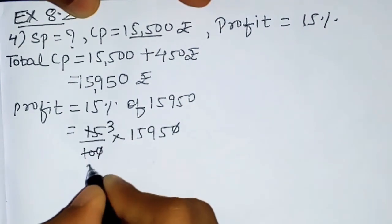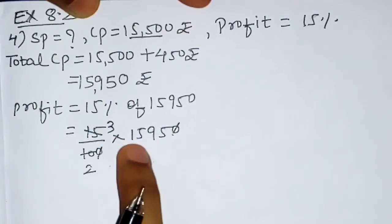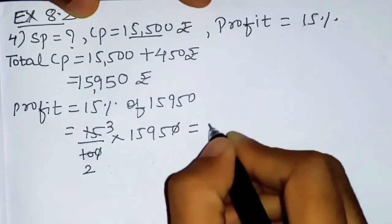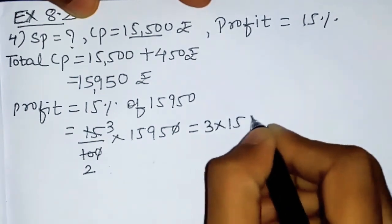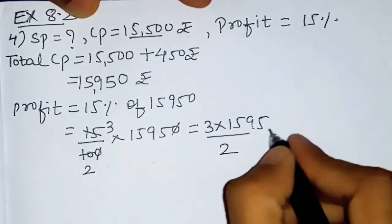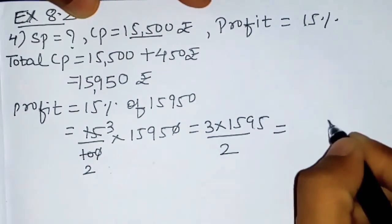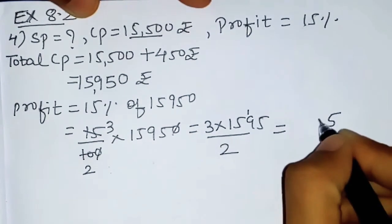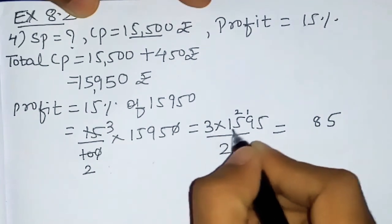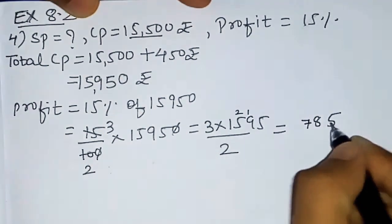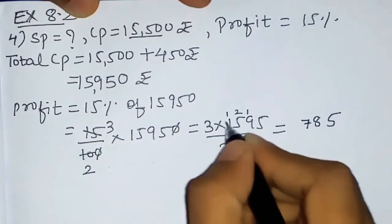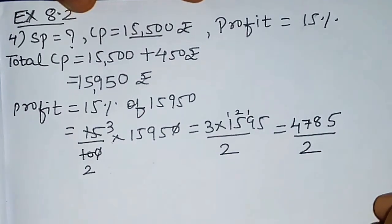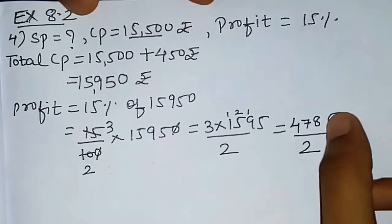So we calculate 3 × 1595 divided by 2. Multiplying: 3 × 5 is 15, carry 1; 3 × 9 is 27, plus 1 is 28, carry 2; 3 × 5 is 15, plus 2 is 17, carry 1; 3 × 1 is 3, plus 1 is 4. So 3 × 1595 gives 4785, then divide by 2.